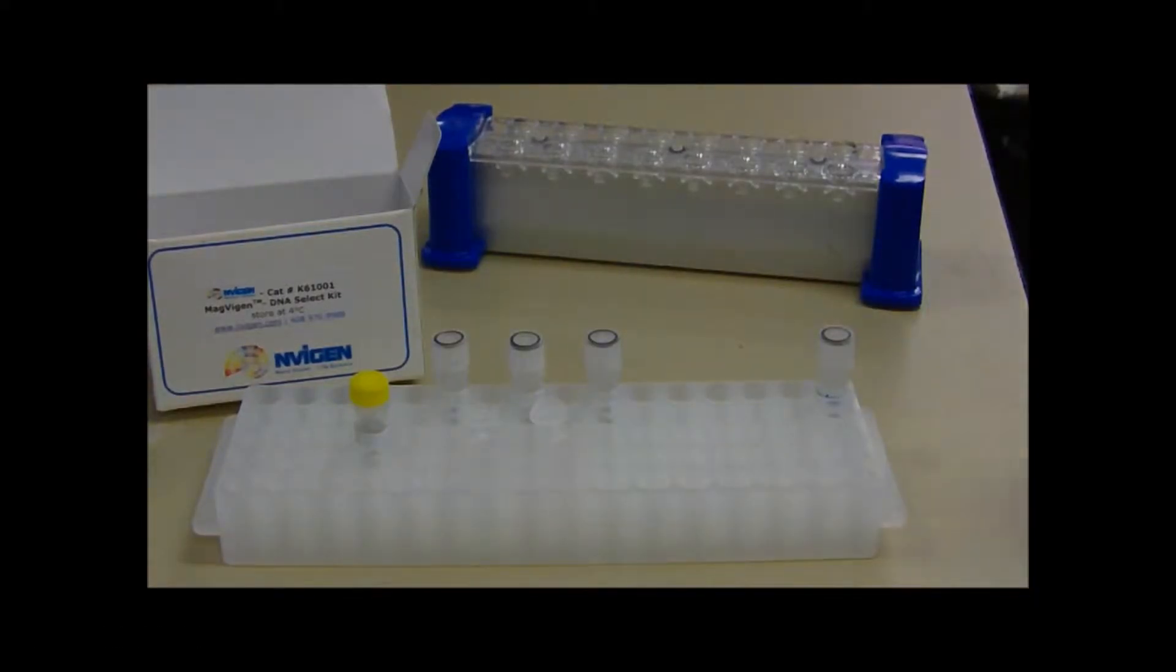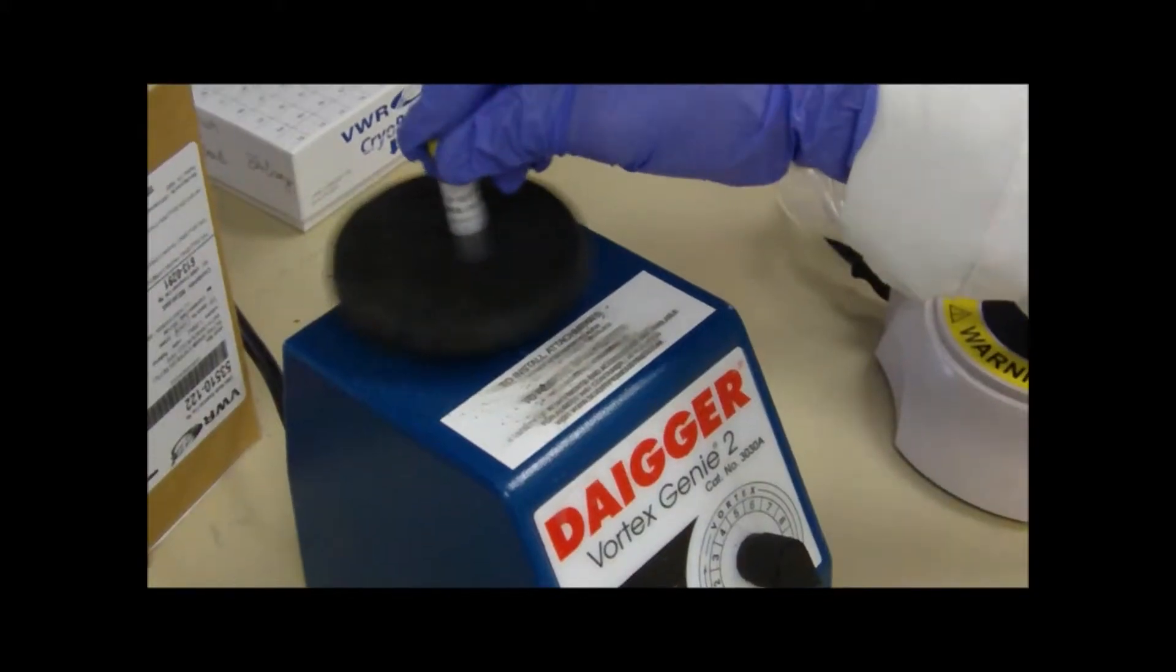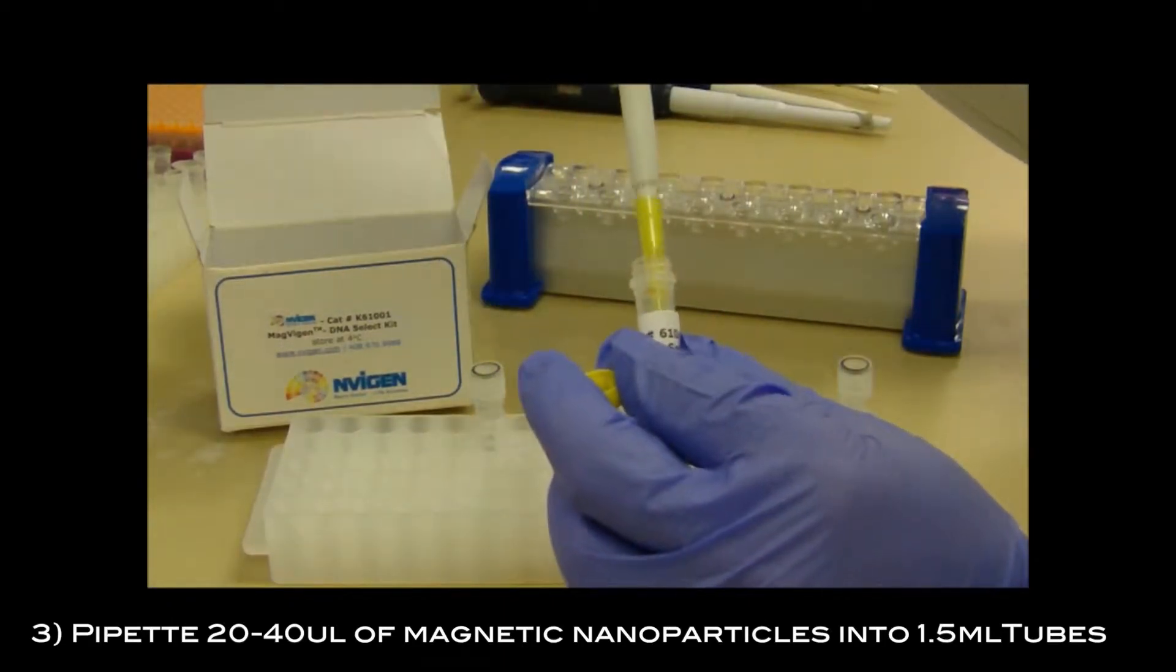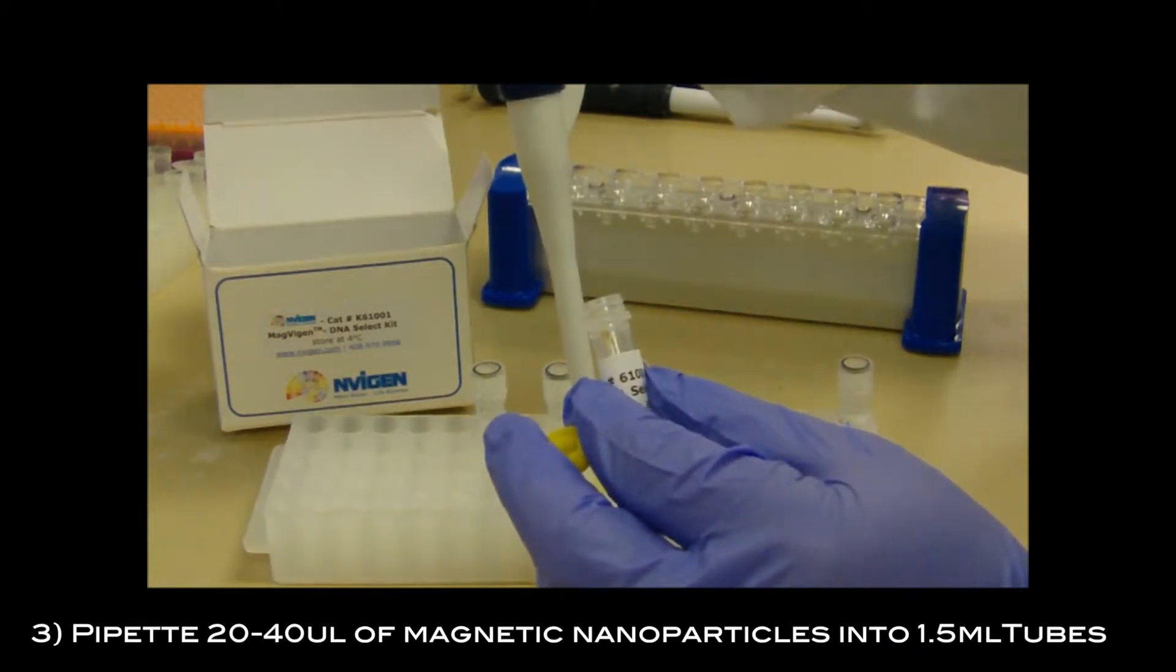Vortex nanoparticles to mix well before use. Take 20 to 40 microliters of magnetic nanoparticles and put them into clean 1.5 milliliter Eppendorf tubes.